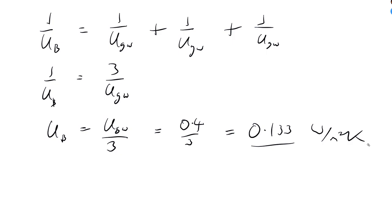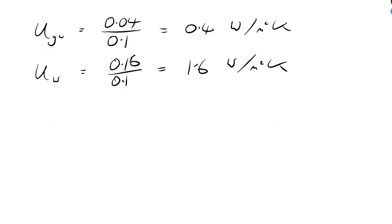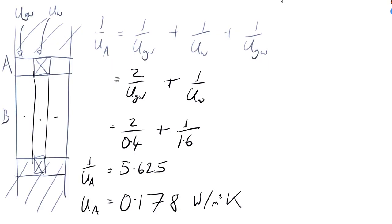So 0.133. So where have we got to now? We've got U_B here. We've got U_A over here. So the next thing we need to work out, and I think we're going to need to have a new page for this. Let's make a new page.